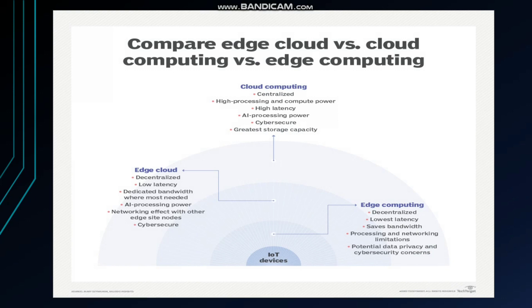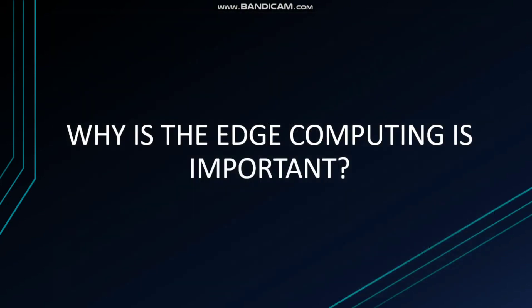Edge cloud is decentralized with low latency, dedicated bandwidth where most needed, AI processing power, networking effect with other edge site nodes, and cyber security. However, the networking effect with other edge site nodes is a drawback. Edge computing is also decentralized, has the lowest latency among the three, but has bandwidth, processing, and networking limitations. It also has potential data privacy and cybersecurity concerns — those are the disadvantages of edge computing.